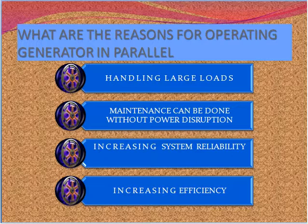There are reasons for operating generators in parallel, or advantages by operating generators in parallel. The first advantage is to handle large loads. The second advantage is that maintenance can be done without power disruption. The third advantage is to increase system reliability. The fourth advantage is to increase efficiency.